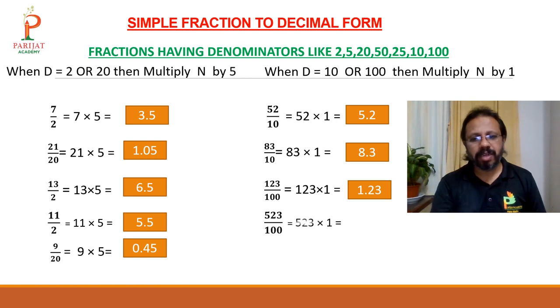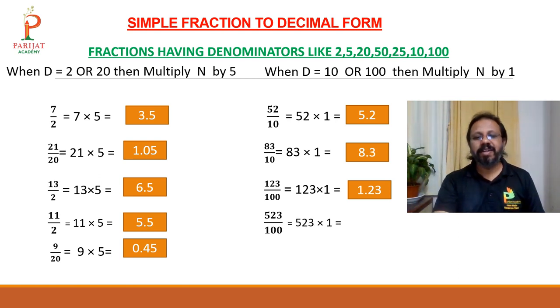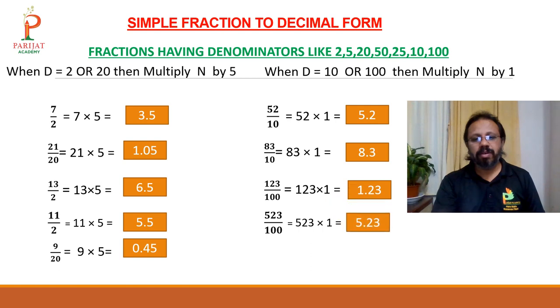523 upon 100: leave the last 2 digits and give the decimal point — answer is 5.23. 12 upon 100: answer is 0.12. Very simple fraction conversion into decimal form.